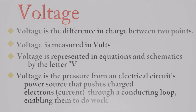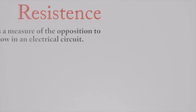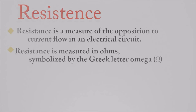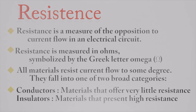Voltage is the pressure from an electrical circuit's power source that pushes charged electrons through the conducting loop, enabling them to do work. Resistance is a measure of the opposition to current flow in an electrical circuit. Resistance is measured in ohms, symbolized by the Greek letter Omega. All materials resist current flow to some degree — they fall into one of two broad categories: conductors and insulators.